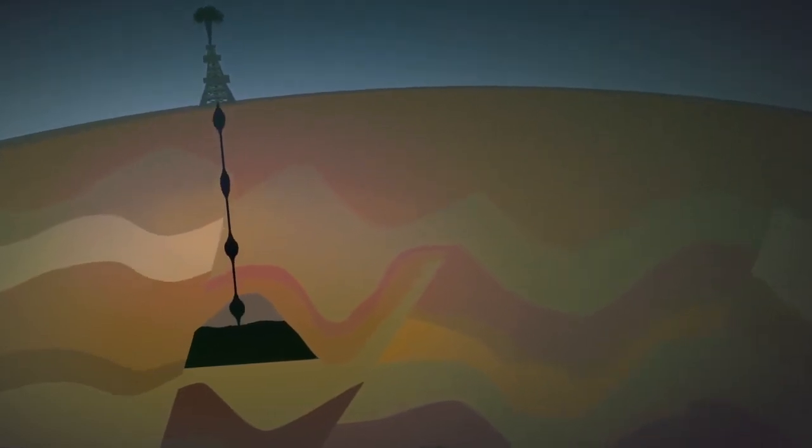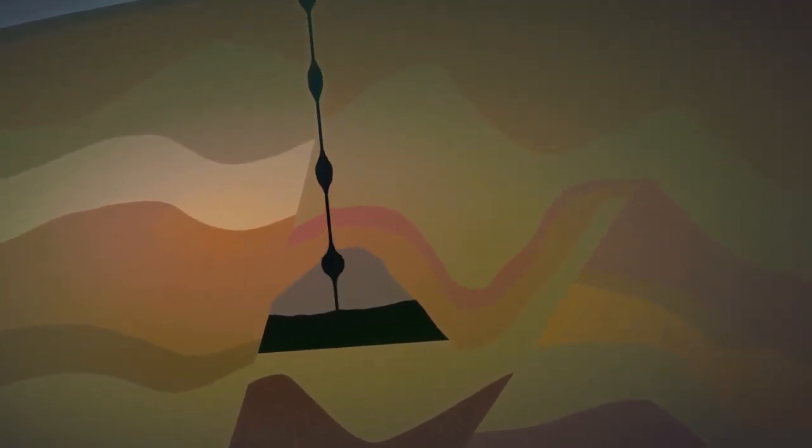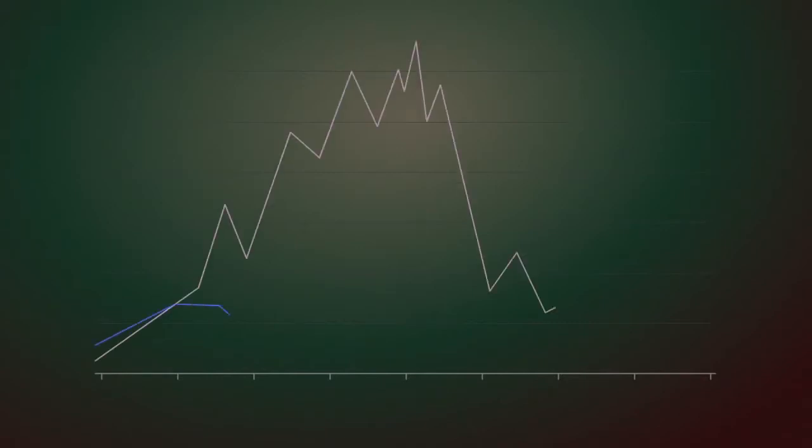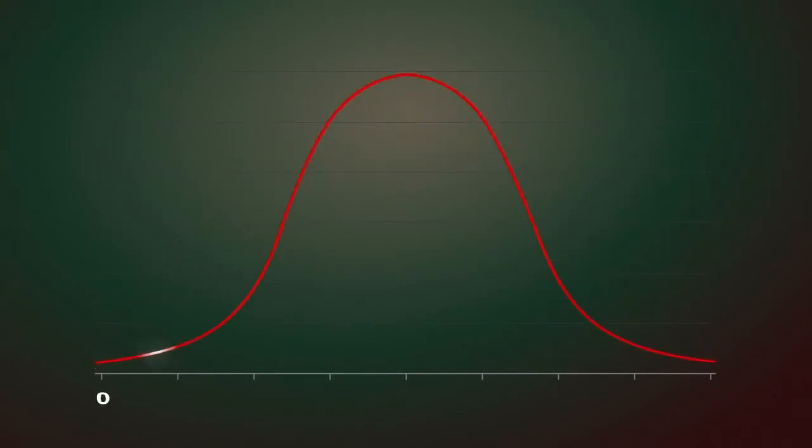Once an oil well starts producing oil, it's only a matter of time before it enters a decline. When many wells are averaged together, the combined graph looks like a bell curve. Typically, it takes 40 years after the peak of discovery for a country to reach its peak of production, after which it enters a permanent fall.